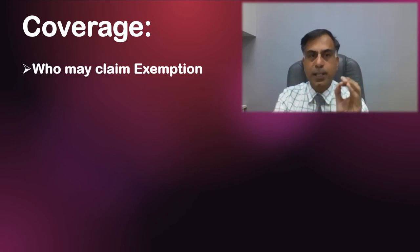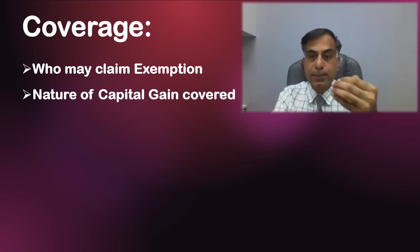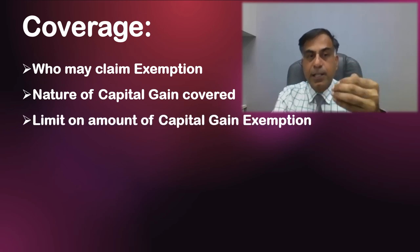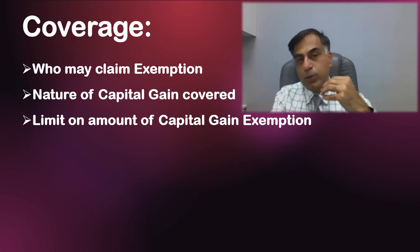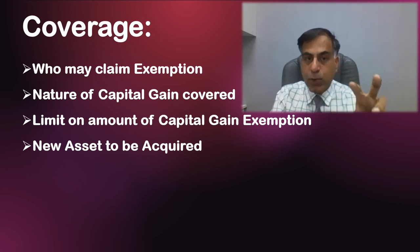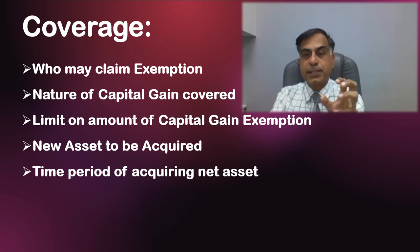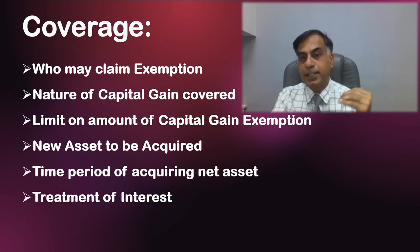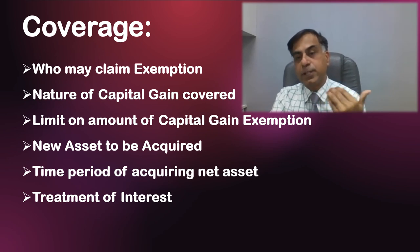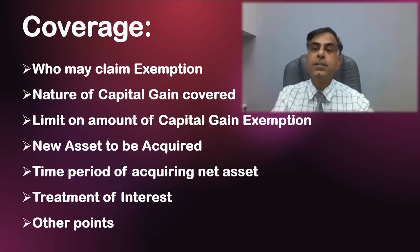To begin with, I will give a brief coverage of all the points we are going to discuss. First, who may claim long term capital gain exemption under Section 54EC? Second, what would be the nature of capital gain covered — is it long term, short term, or both? Third, the limit on the amount of long term capital gain exemption — is there a maximum threshold? Fourth, what is the new asset allowed to be acquired under Section 54EC? Fifth, what is the time period for acquiring the new asset? Sixth, if the assessee does not adhere to that time limit, they will lose the entitlement to claim the exemption. And finally, what will be the treatment of the interest earned on purchase of certain bonds under Section 54EC?